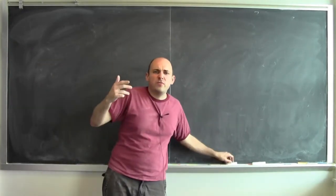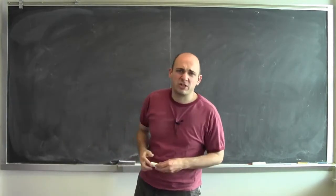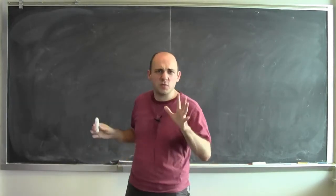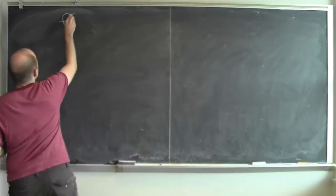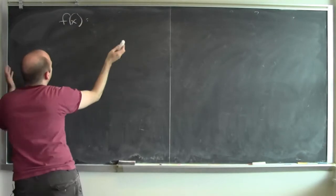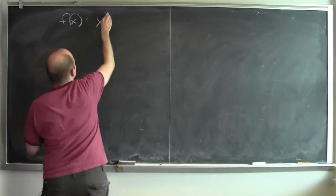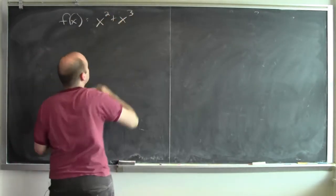How do you calculate the derivative of a sum of two functions? Let's do an example. Here's a function f of x: f of x equals x squared plus x cubed.